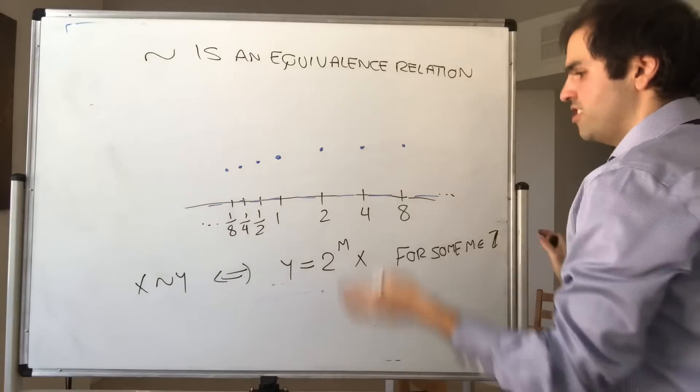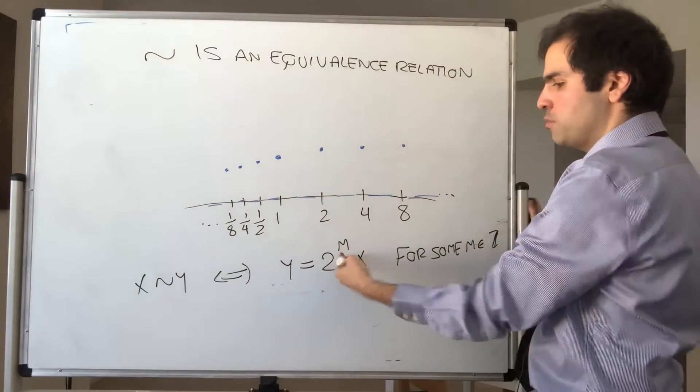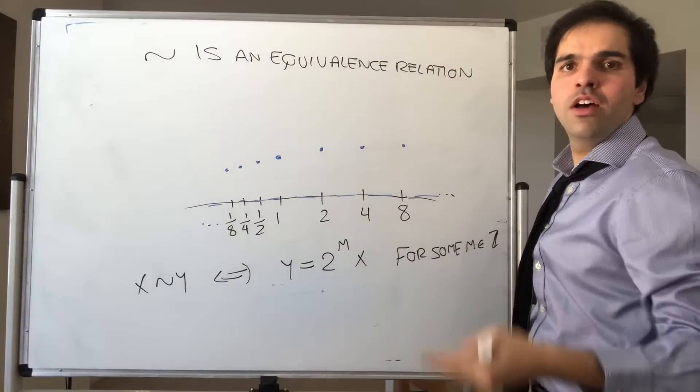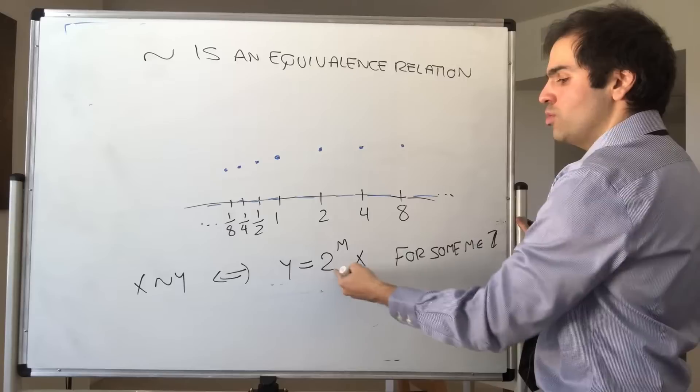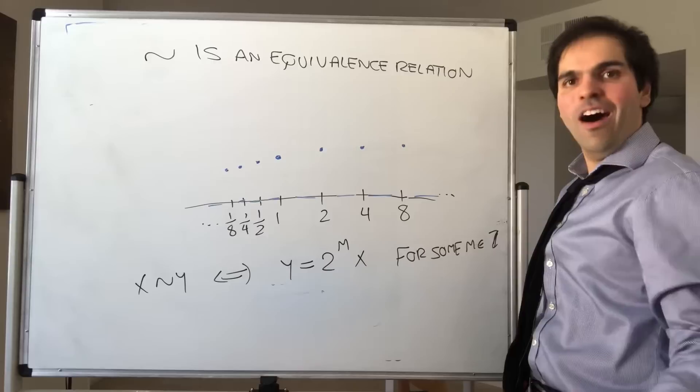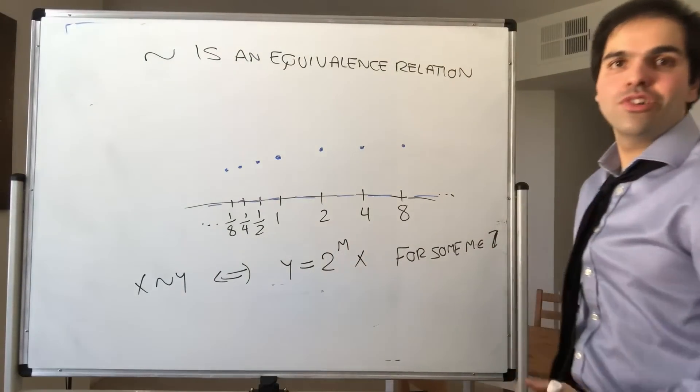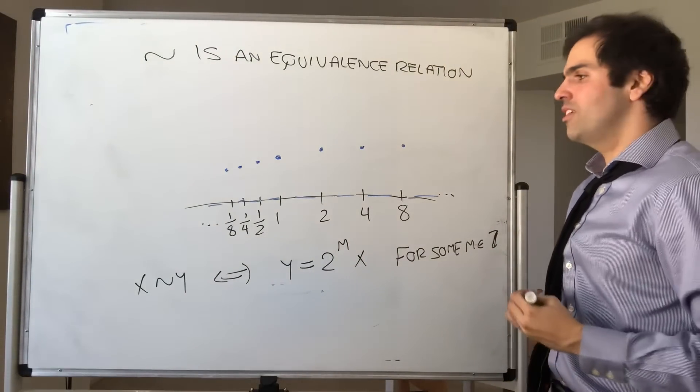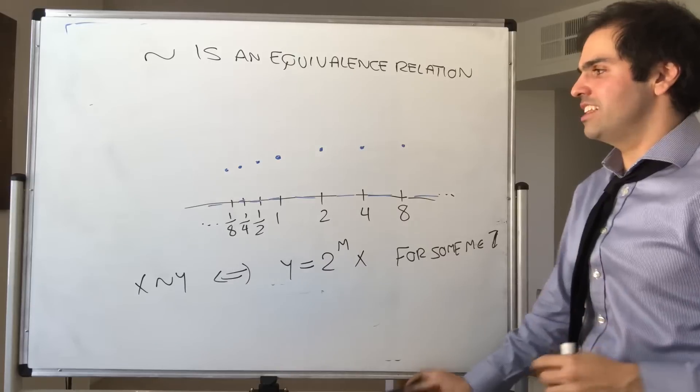And to show this, for example, x is equivalent to x by just letting m equal 0. And if y equals 2 to the mx, then x is 2 to the minus m y, which is also an integer. So also y is equivalent to x, and you can show transitivity.